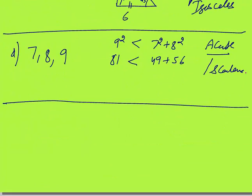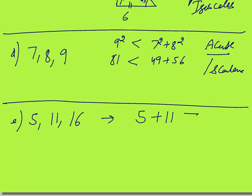The last case, the fifth case: sides are 5, 11, and 16. What kind of triangle is it? Pause the video and try. Now, this is not a triangle, because the basic condition is that the sum of the two smaller sides — 5 plus 11 — must be greater than 16, which is not the case here. So this is not a triangle.